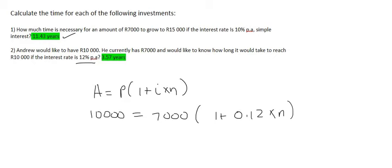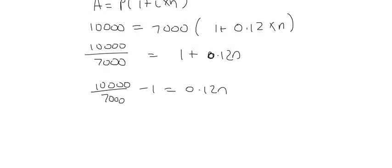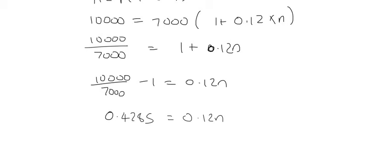As with the previous example, we first have to divide by 7,000. And so, then it's going to look like this. You then take the 1 over to the left-hand side. And then you can type that in on the calculator. And that's going to give you 0.4285 equals to 0.12N.